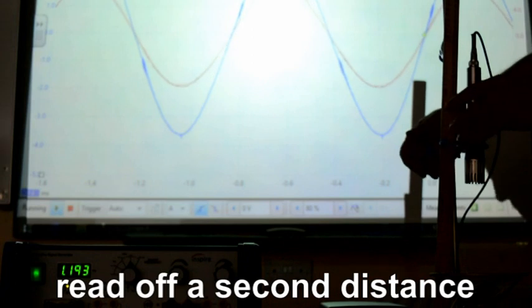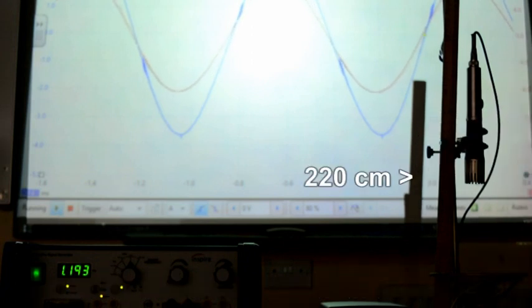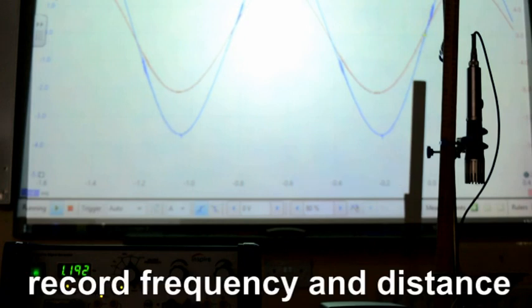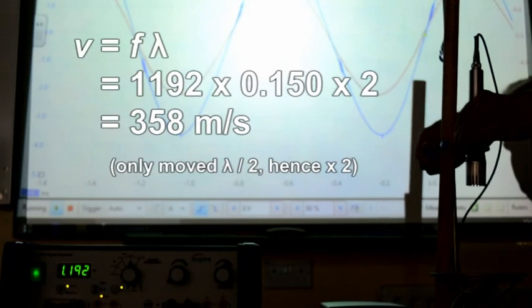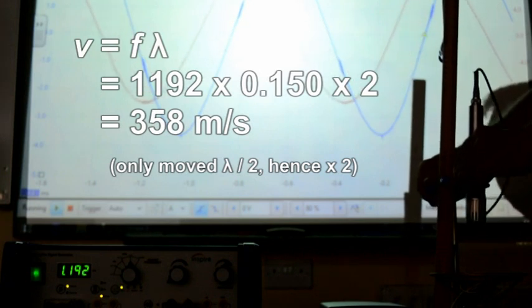So knowing the distance moved and the frequency using the equation v equals f lambda, multiply one by the other to find the speed of sound in air. In this case 358 m per second.